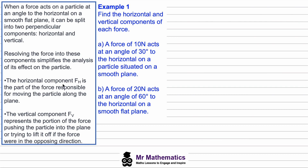The horizontal component, which we'll call FH, is the part of the force responsible for moving the particle along the plane. The vertical component, which we'll call FV, represents the portion of the force pushing the particle into the plane, or trying to lift it off if the force were acting in an upward direction.